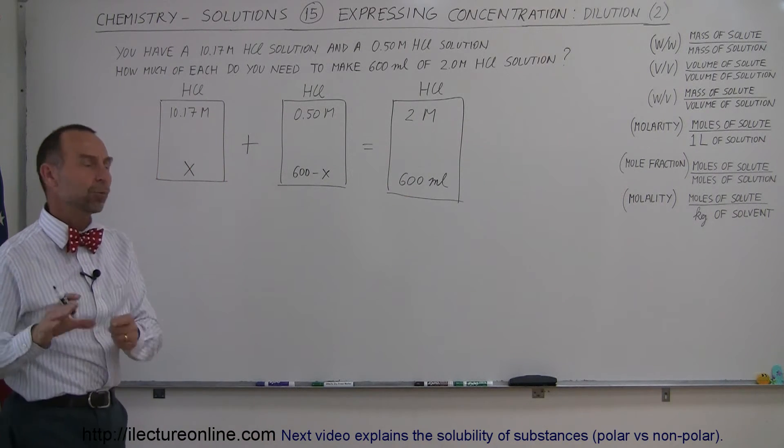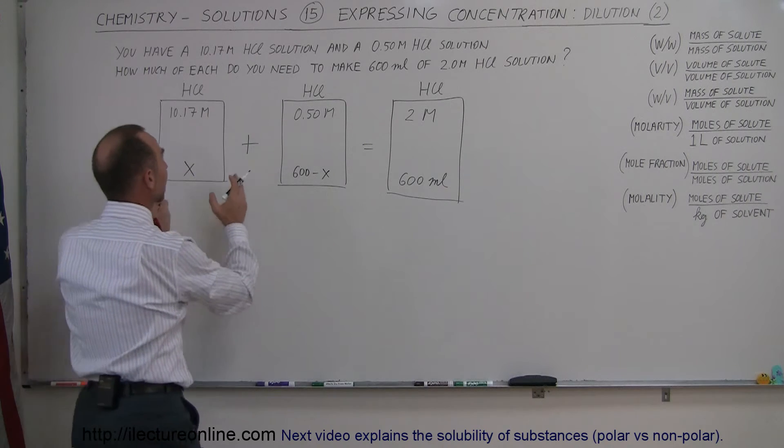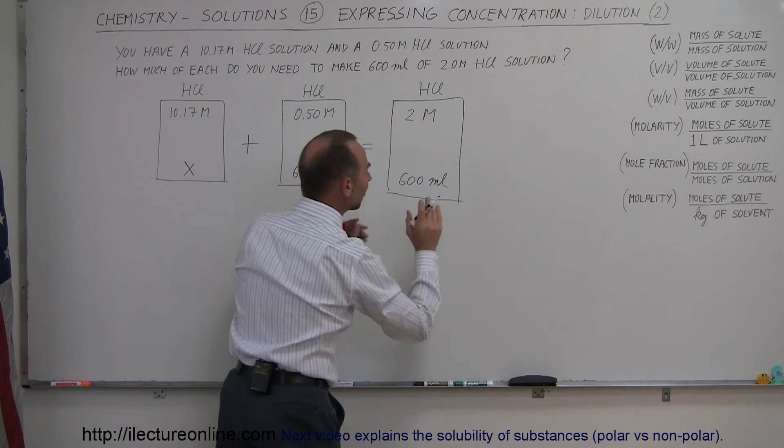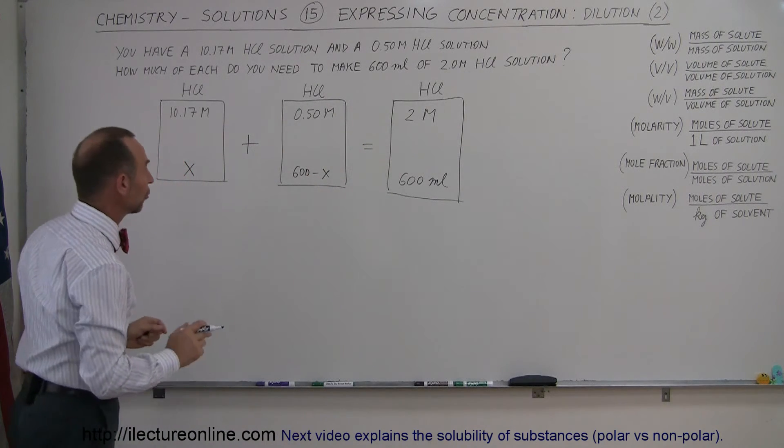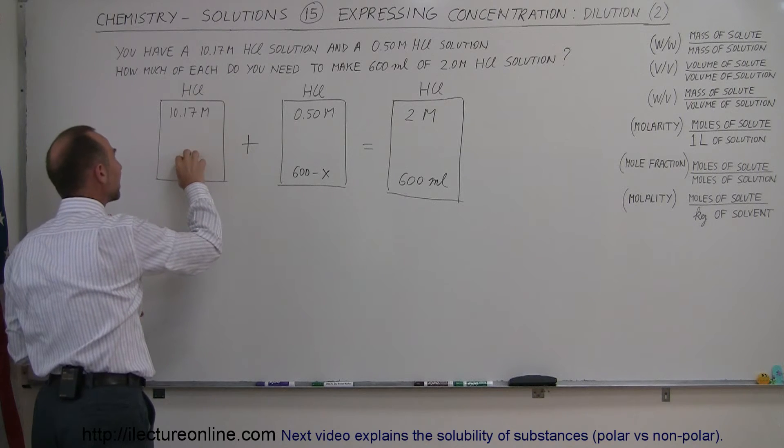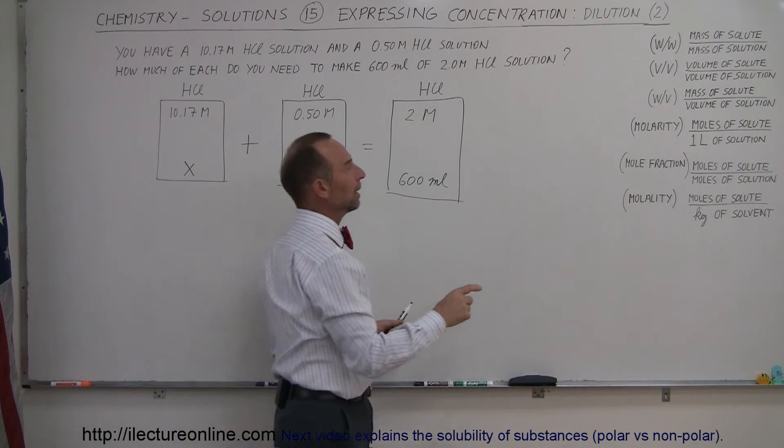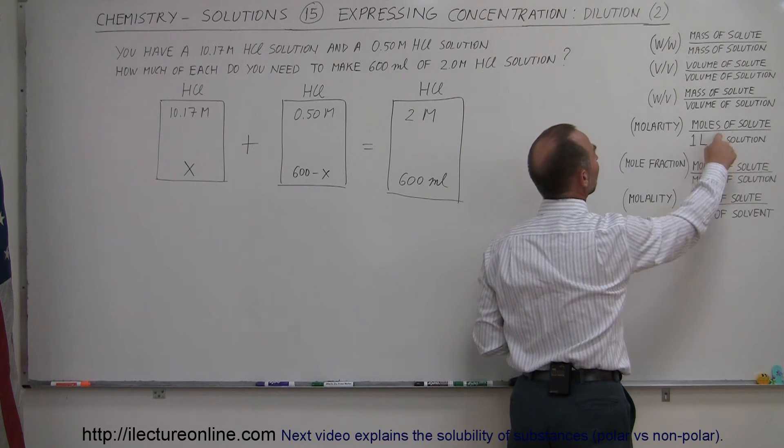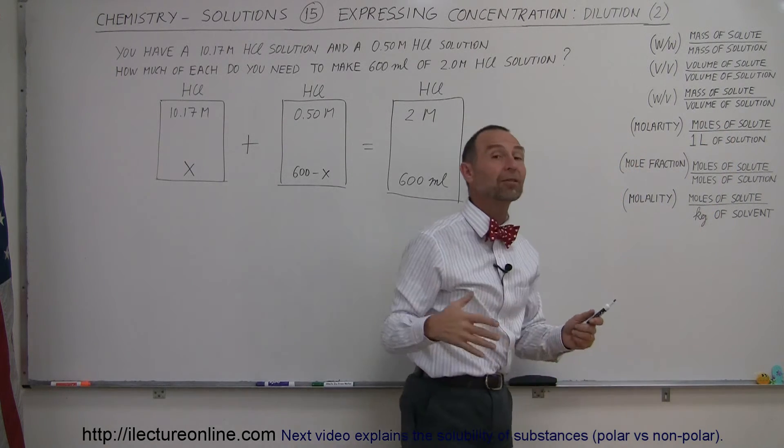And now you set up an algebraic equation where you keep track of how much hydrochloric acid you have. Whatever you have on the left side of the equation must equal the amount that you have on the right side of the equation. So to do that you multiply the molarity times the amount that you have. Remember since molarity is the number of moles of solute per liter of solution, if you multiply the two together you get the total amount of solute.